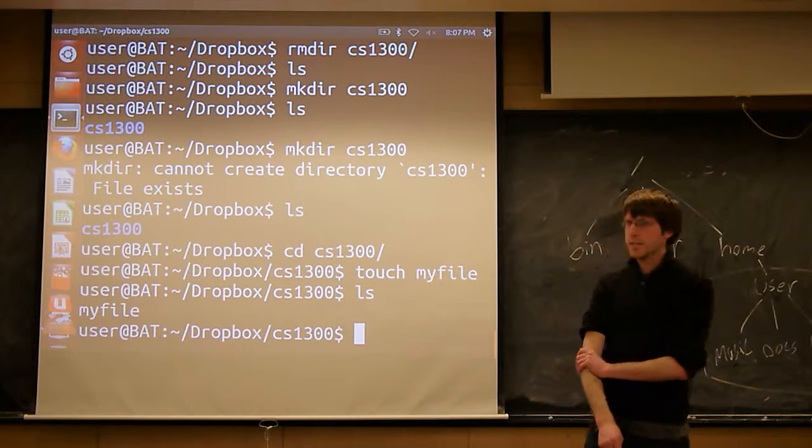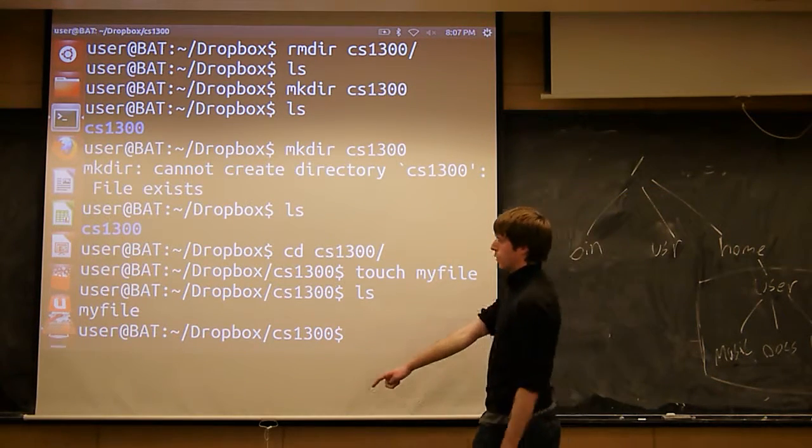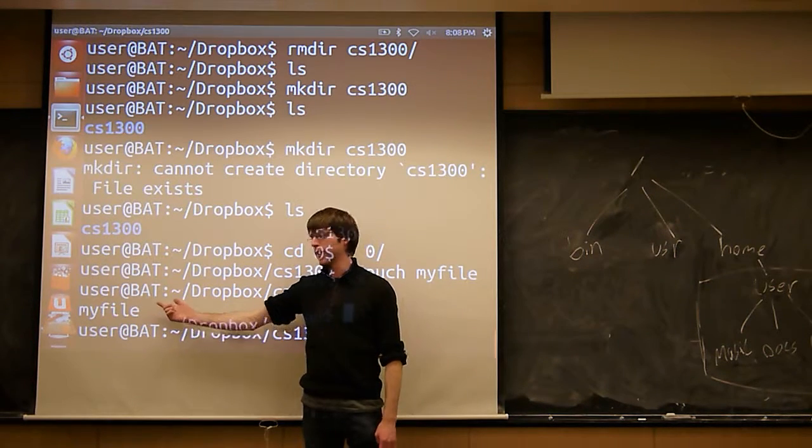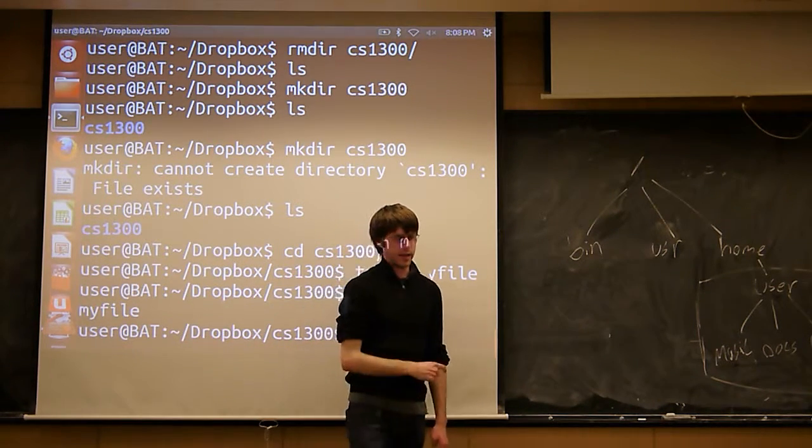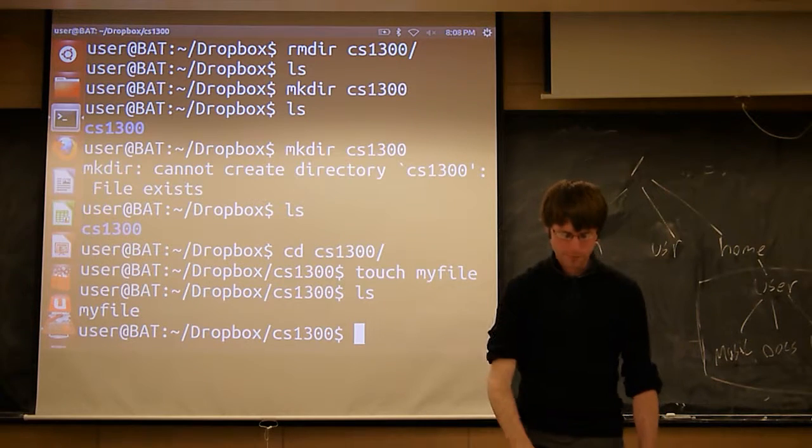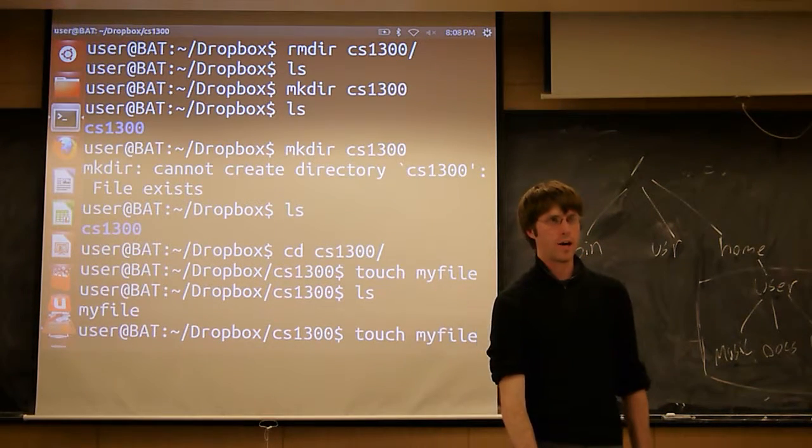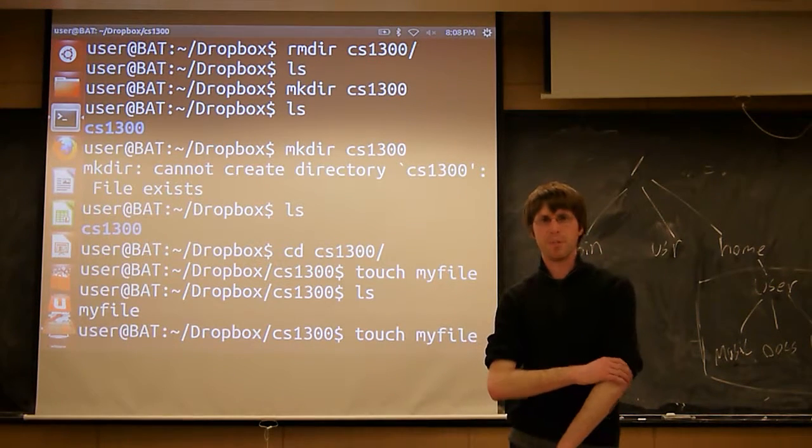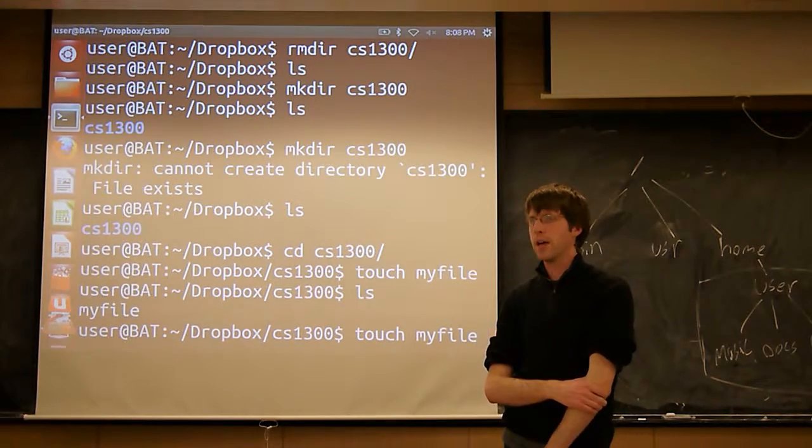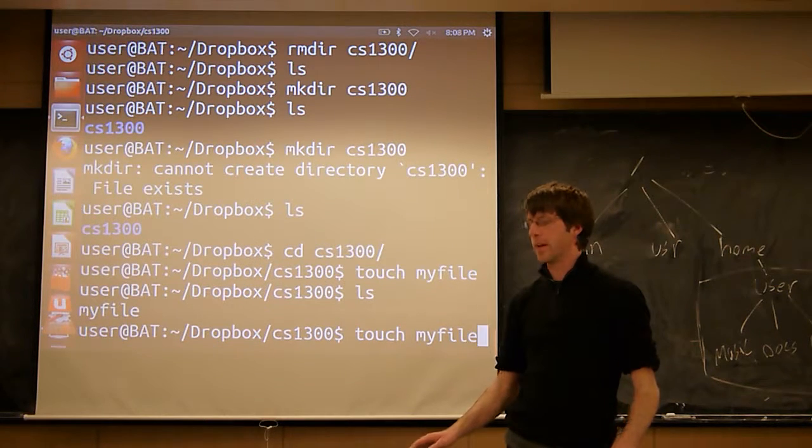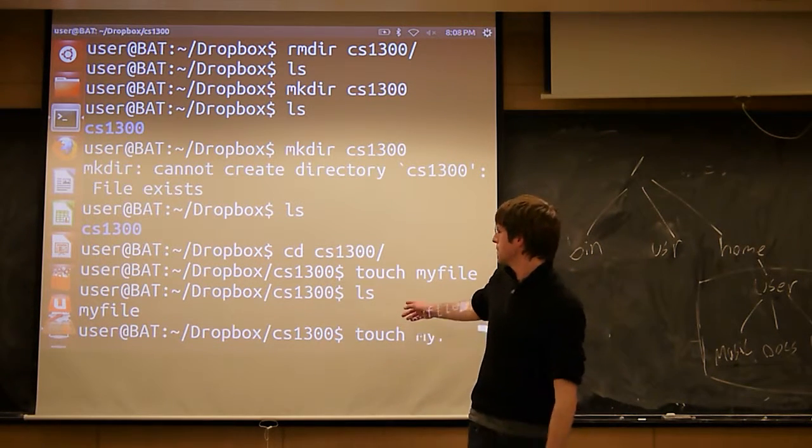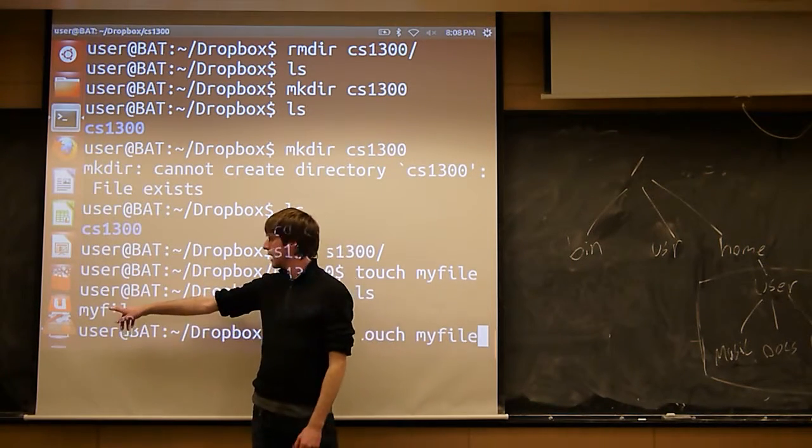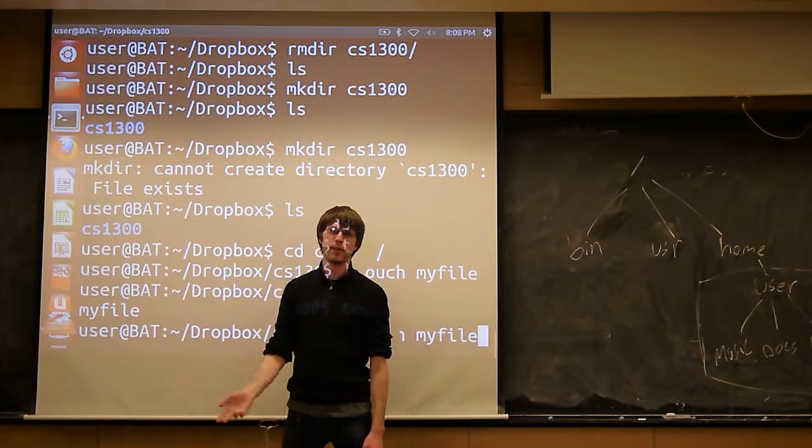You may be used to an operating system like Windows where all files always have file extensions. They're always myfile dot something, and that something matters. In Linux, you often will see that, but that something doesn't matter. Unlike Windows, the file type is much less strictly defined in Linux. Everything is kind of treated the same. So by default, if you have a file, the convention is a file with no file extension is generally a text file.